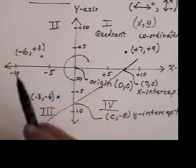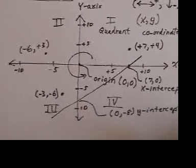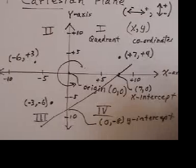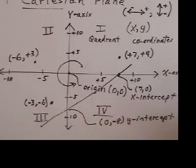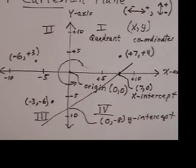So these are some of the vocabulary words that you're going to be using in this section. Intercepts, quadrants, plotting a point, x-axis, y-axis, x-coordinates, y-coordinates, and origin.